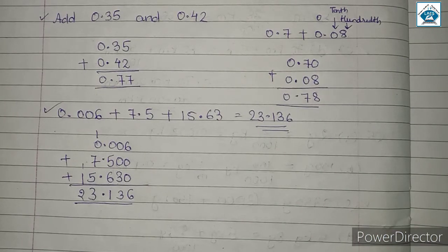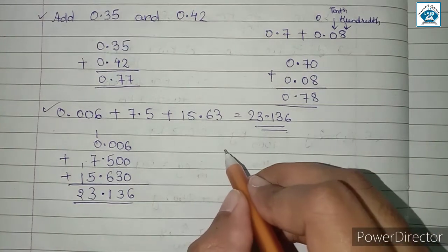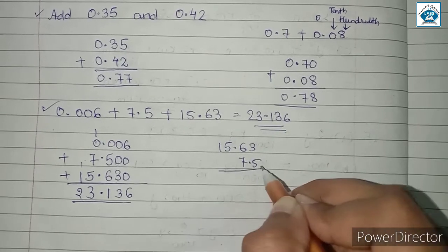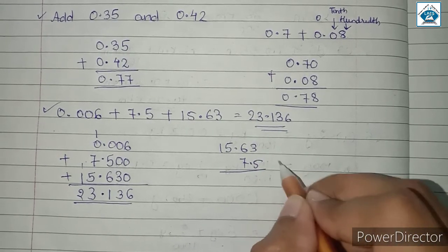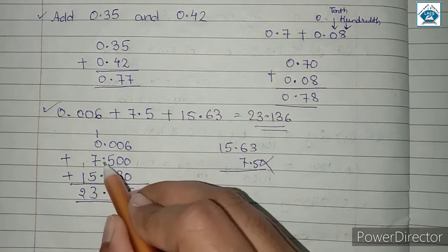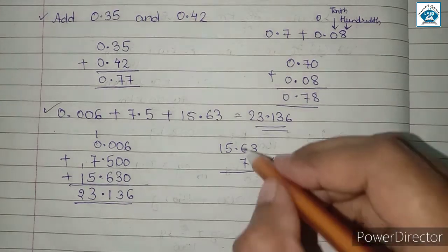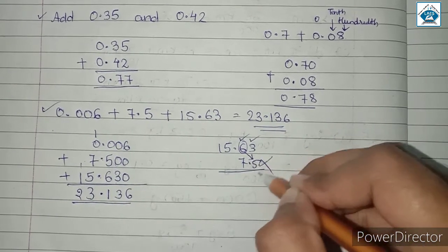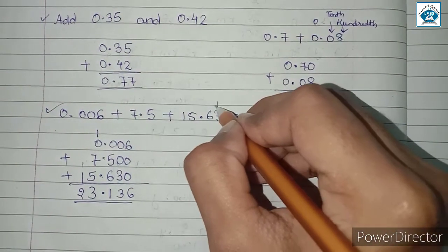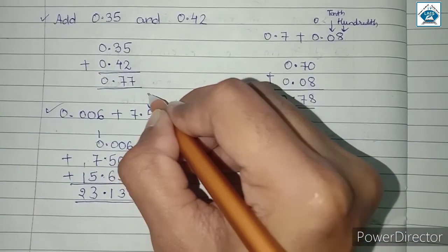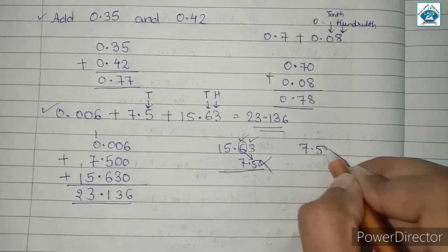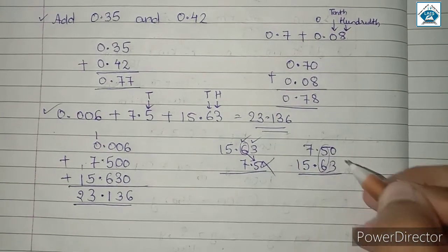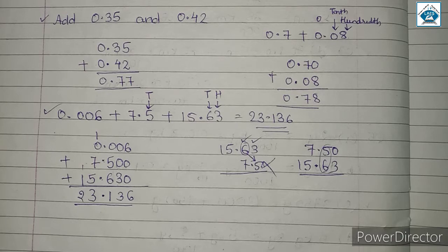One thing we always have to keep in mind — I am again repeating — point should come under point. If instead we wrote 15.63 and misaligned 7.5, then we would wrongly add the 3 with the 5, which is incorrect. The point must come below the point because the 10th place must be added with the 10th place, and the 100th place must be added with the 100th place of the other number. In this way we can correctly add given decimal numbers.